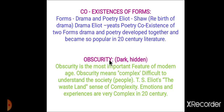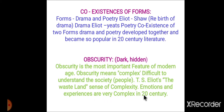Obscurity is the most important feature of the modern age. Obscurity means complexity — when people have more knowledge, they have complex questions about what to do and what not to do, making it difficult to understand. T.S. Eliot's 'The Waste Land' captures this sense of complexity. Emotions and experiences are very complex in the 20th century, with a lot of difficulties and confusions.